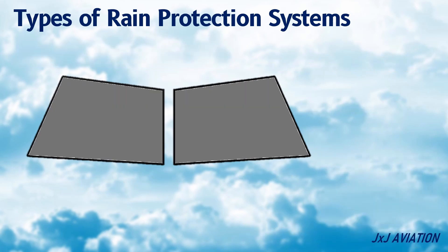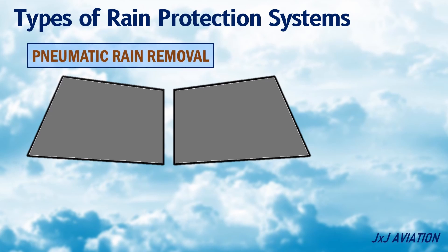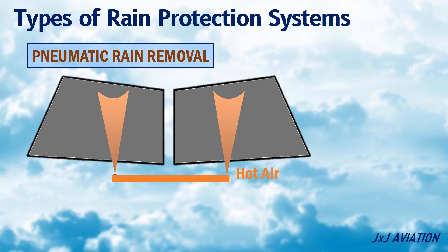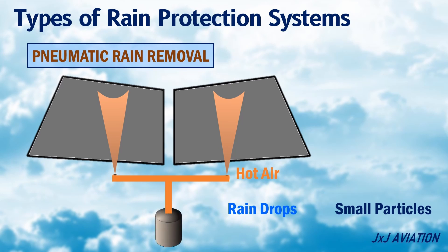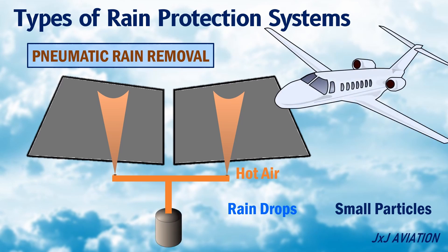Pneumatic Rain Removal. Here, hot air is directed over the outer surface of the windshield. This hot air splits the raindrops into smaller particles and blows them away. The hot air may be taken from the engine bleed air system or an electric blower.